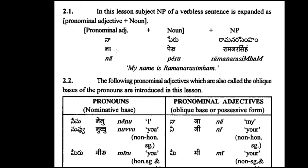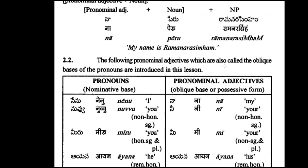So we'll go to the next one. In this lesson, the subject NP of a verbless sentence is expanded as a pronominal adjective plus noun. Let's see the example sentence. Pronoun — this is like a possessive noun — okay, pronoun, this is called noun. So 'na peru Rama Narasimham' — whenever you want to say your name, you need to say like this. Instead of just the name, you say 'na peru' then your name. My name is Raveen — 'na peru' then say your name so others can understand.